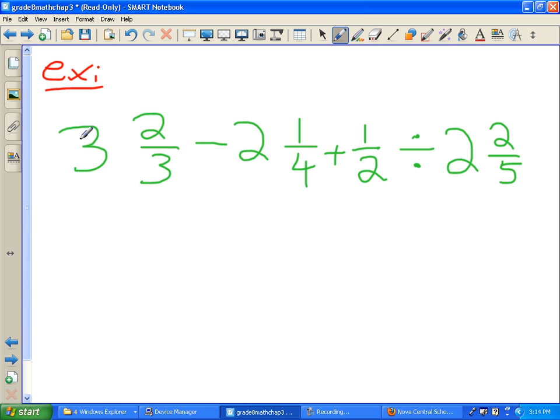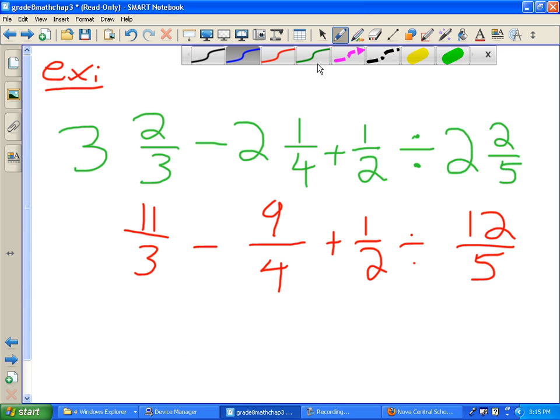The next one involves whole numbers or mixed numbers with a whole number in front of it. Now the first thing to do when you get one of these is to change all of these mixed numbers to improper fractions. So let's do that. So this one's going to be out of 3, take away something, and that's going to be out of 4, plus 1 half. So at least the 1 half doesn't change. Divided by something out of 5. So we're going to change these. So let's change this to an improper fraction. 3 times 3 is 9, 10, 11. 2 times 4 is 8, plus 1 more is 9. 2 times 5 is 10, plus 2 more is 12. Now we can go ahead and use BEDMAS to figure out which one to do first.